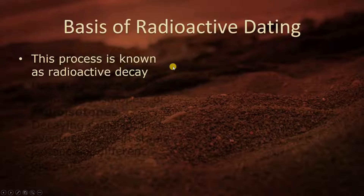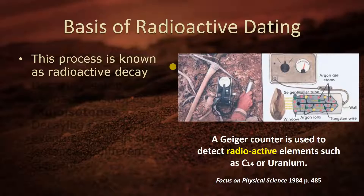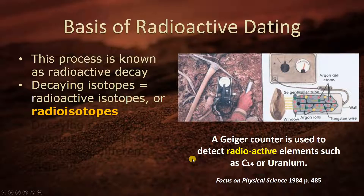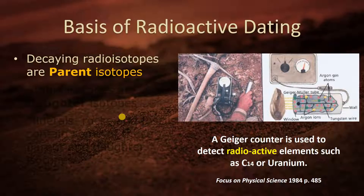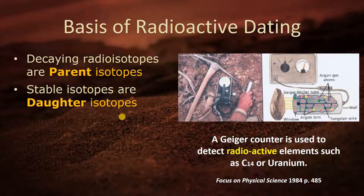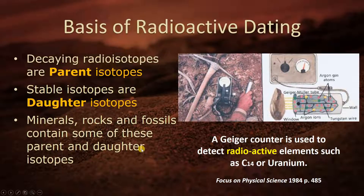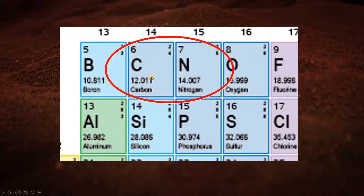The basis of radioactive dating: this process is known as radioactive decay. A Geiger counter is used to detect radioactive elements such as carbon-14 or uranium. Decaying isotopes are the same as radioactive isotopes, or radioisotopes for short. Decaying radioisotopes eventually result in stable isotopes of different elements. There are parent isotopes like carbon-14 or uranium, and the stable isotopes they turn into are daughter isotopes, like nitrogen or lead. Minerals, rocks, and fossils contain some of these parent and daughter isotopes.